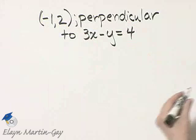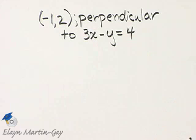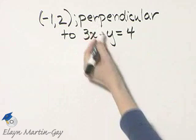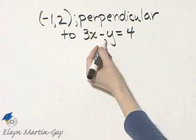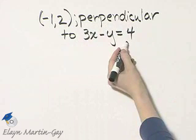So, first of all, to find the slope of the line that we're looking for, we're given perpendicular to this graph. Let's find the slope of the graph of this equation.